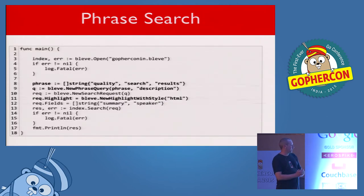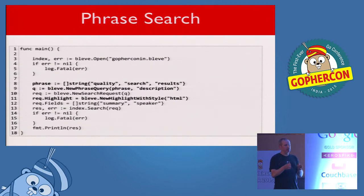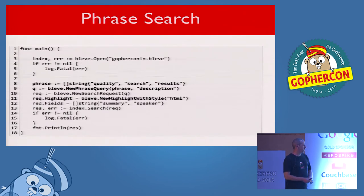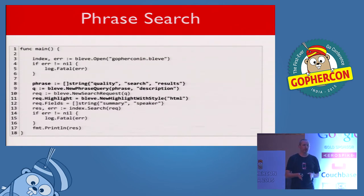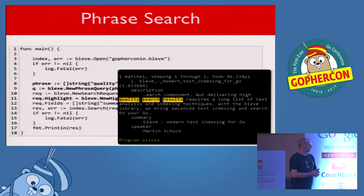I've gone ahead and built the index to save time. Now I'm going to run a few different kinds of searches. On line 8 I'm building a phrase query — before we did a term search, which was just a single term, but a phrase looks for multiple terms occurring in a particular sequence. Here I'm searching for the terms 'quality', 'search', and 'results' in an array of strings. I'm also passing in the description field to restrict the search to just that field. On line 11 I've added the highlight capability, so inside the search results it will highlight the actual terms that matched. When we run that, we see highlighted 'quality search results' — the phrase we were looking for.